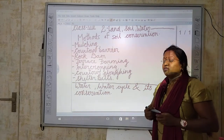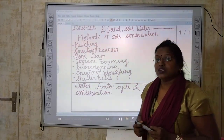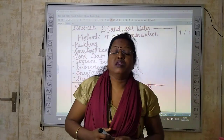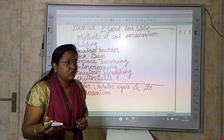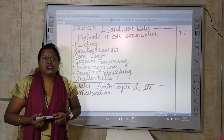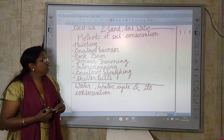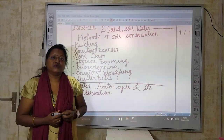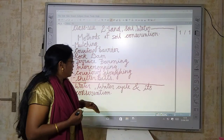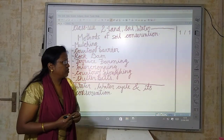How can we conserve our water? When we practice afforestation — meaning growing more trees — soil water will be regained. Also, less use of chemicals and fertilizers helps in the conservation of water.